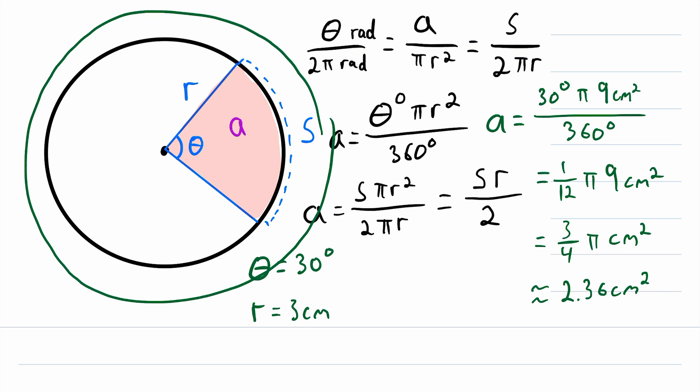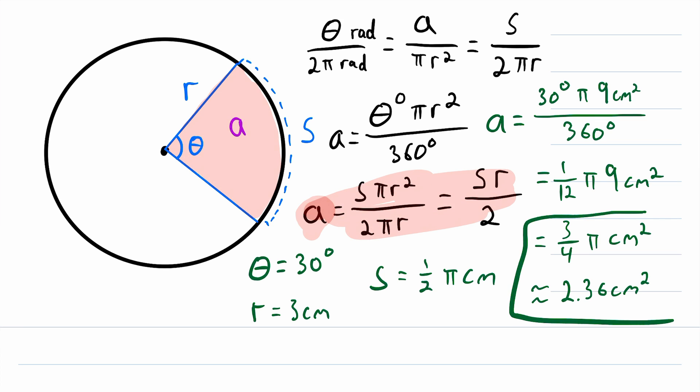Now let me tell you a secret about this circle so that you have a practice exercise to do. Its arc length S is equal to 1/2 pi centimeters. I'll write it down here. S, the length of this arc, is equal to 1/2 pi centimeters. So now that you know S, the length of this arc, try finding the area of the sector using this formula. If you do it right, you'll get the exact same area we got before. Let me know how it goes down in the comments.